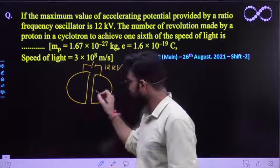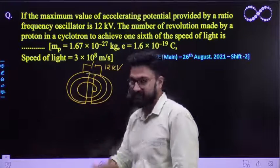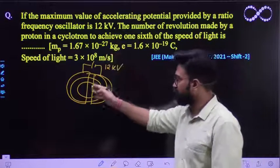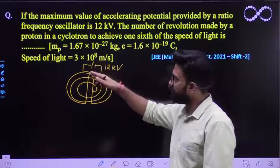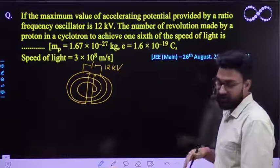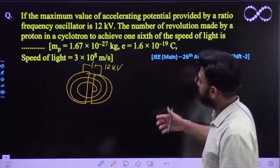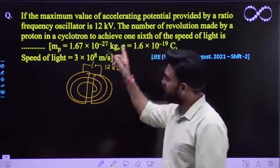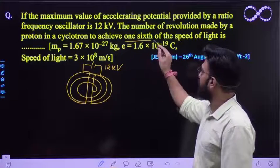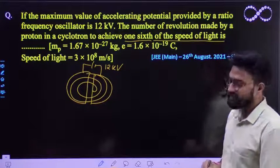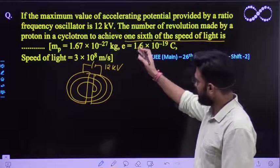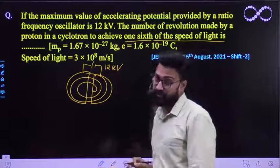Within this cyclotron any charged particle will keep on accelerating. So the number of revolutions made by the proton which is a revolving particle over here in a cyclotron to achieve one sixth of the speed of light. So what should be the number of revolutions by this proton so that it achieves a speed of one sixth of the speed of light. And the mass of proton is also given to you, and charge of electron is also given to you, and speed of light is also given to you.